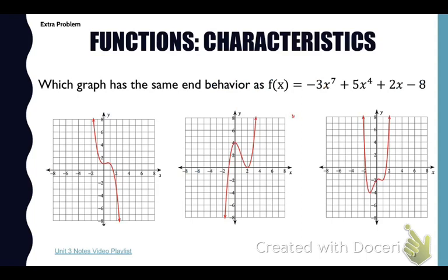Let's continue with these practice problems in the notes packet. Which graph has the same end behavior as this function? Well, for end behavior, you're going to look at the degree of the function, which is seven, and the leading coefficient, which is negative. So it's an odd degree with a negative leading coefficient. So we'll have opposite end behavior that is up on the left and down on the right. So the only graph that matches with that is the first one.